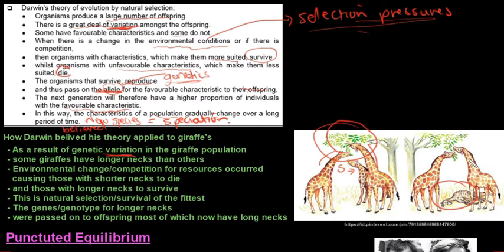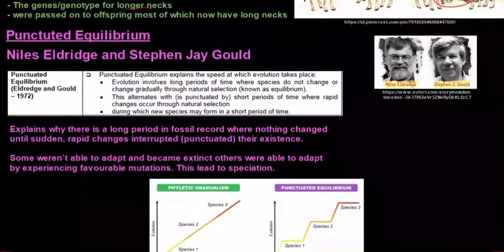And those with the longer necks survived and they thrived and they were able to pass on the genes or the genotype for these longer necks to their offspring. And that is why we have populations of giraffes with long necks. So that is Darwinism in a nutshell.